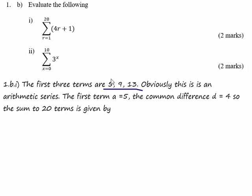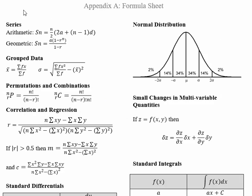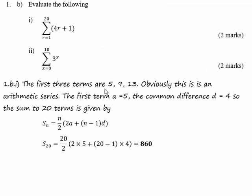So the sum to 20 terms is given by that equation. The sum to n terms of an arithmetic progression is given by n over 2 brackets 2a plus n minus 1d. Putting in the values, the first term is 5, n is 20, and d is 4. Put the values in and we get 860 is the answer.